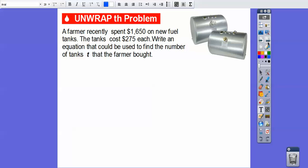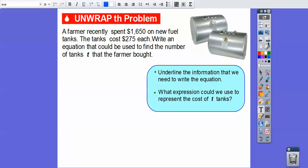All right, so here we go. A farmer recently spent $1,650 on new fuel tanks. The tanks cost $275 each. Write an equation that could be used to find the number of tanks T that the farmer bought. Let's answer a couple questions here. So let's underline the information that we need to write the equation. The farmer spent $1,650 on tanks, and each tank cost $275, and we're going to represent T for the number of tanks.